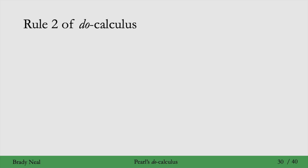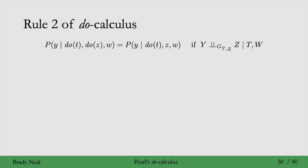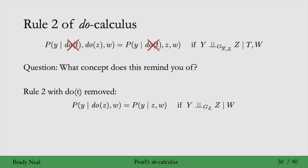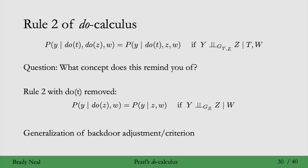Let's now move on to the second rule of do-calculus. I have the same question again: what concept that we've seen previously does this remind you of? If we apply the same trick of taking the treatment to be the empty set, we get a special case of rule two. This is the framing of the backdoor adjustment in terms of d-separation. So rule two of do-calculus is a generalization of the backdoor adjustment and backdoor criterion, where we've added do(t).